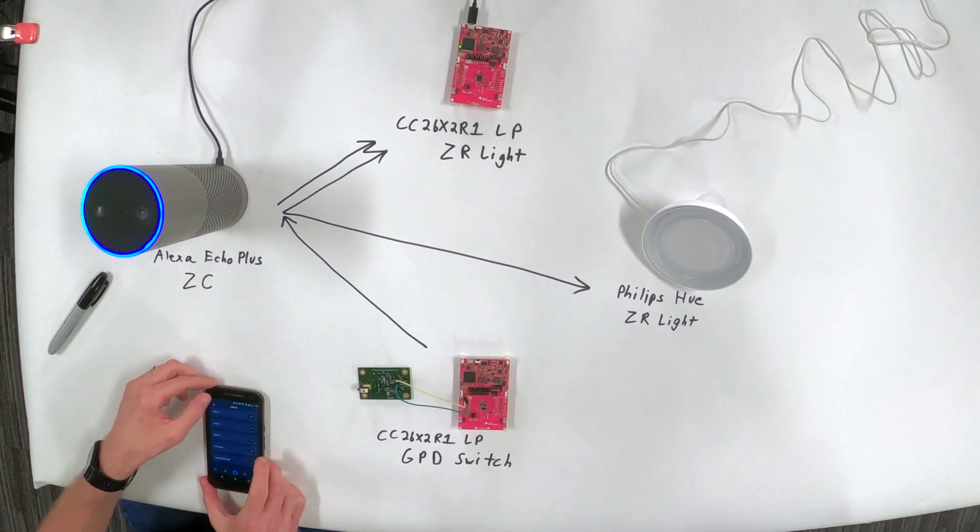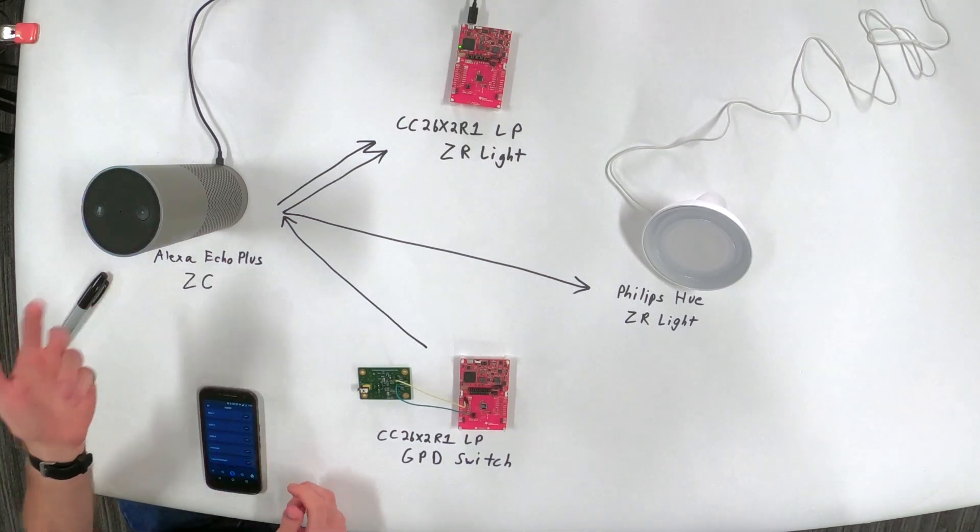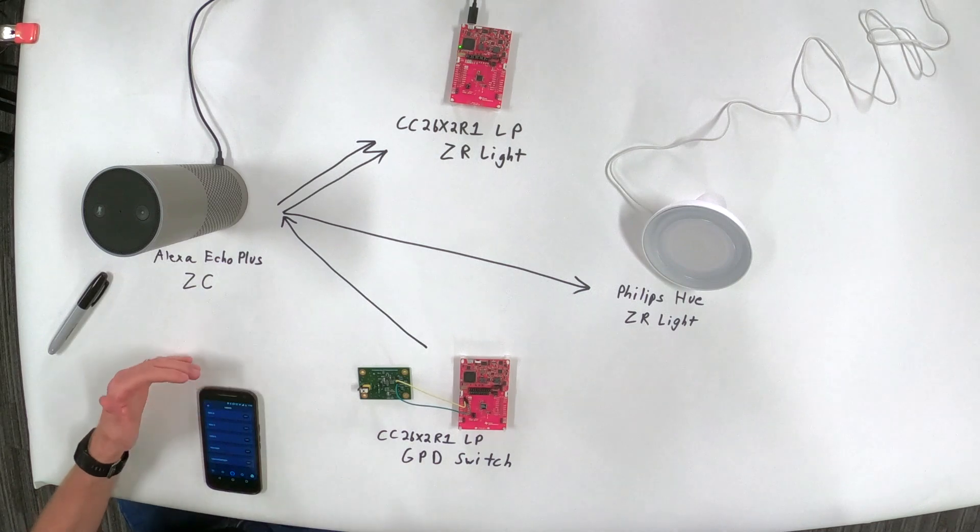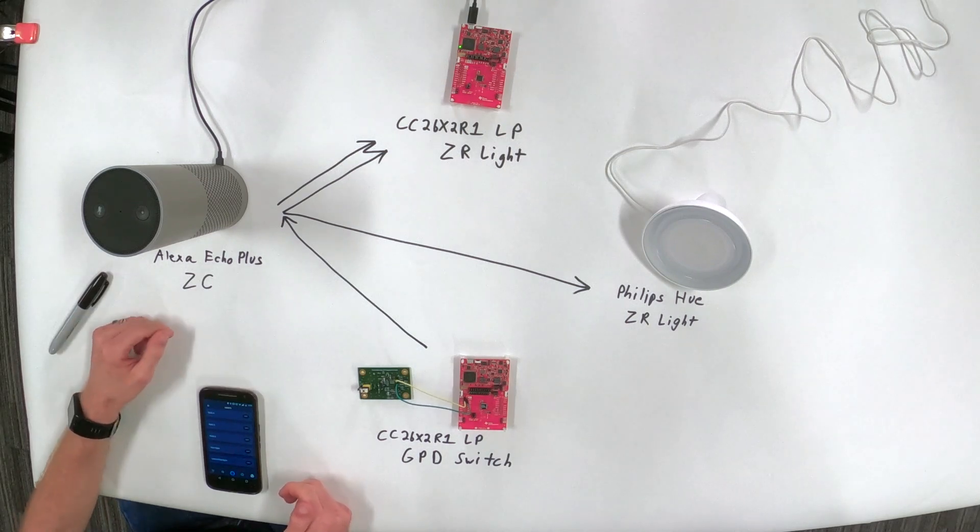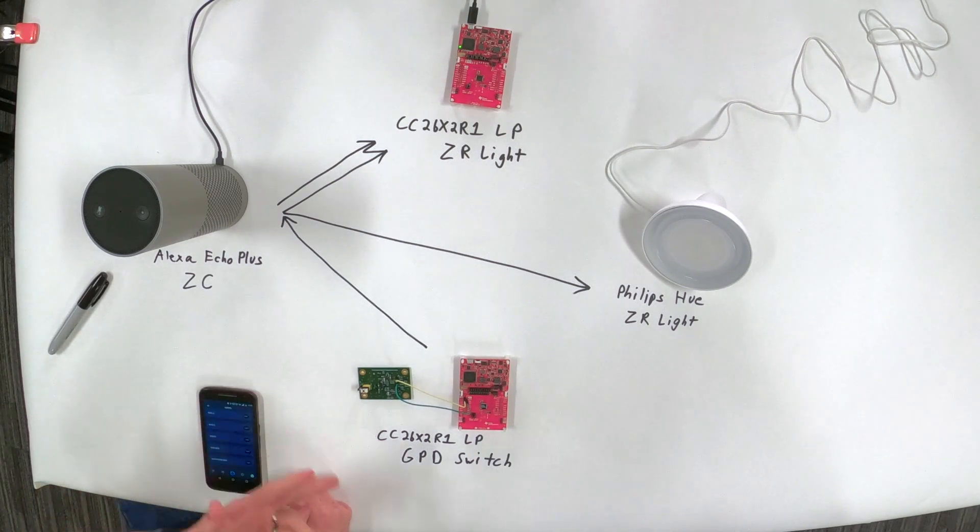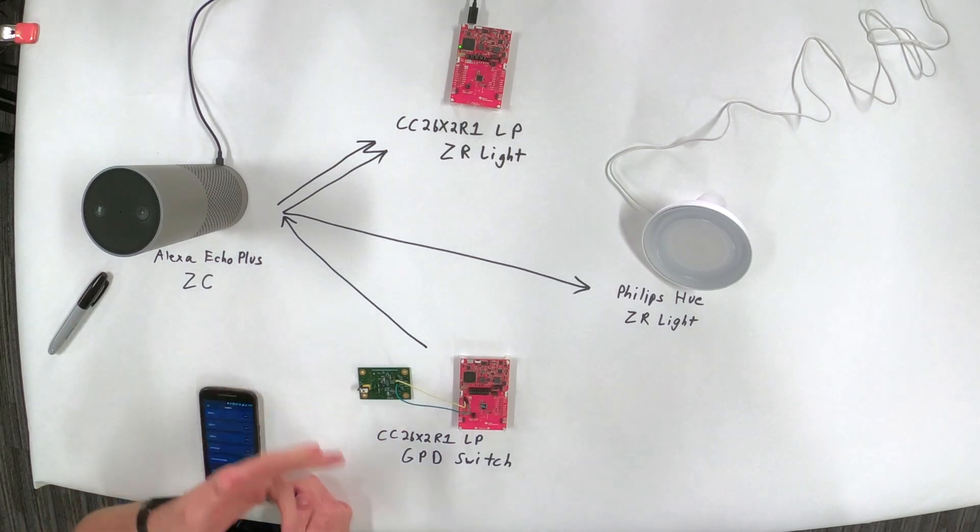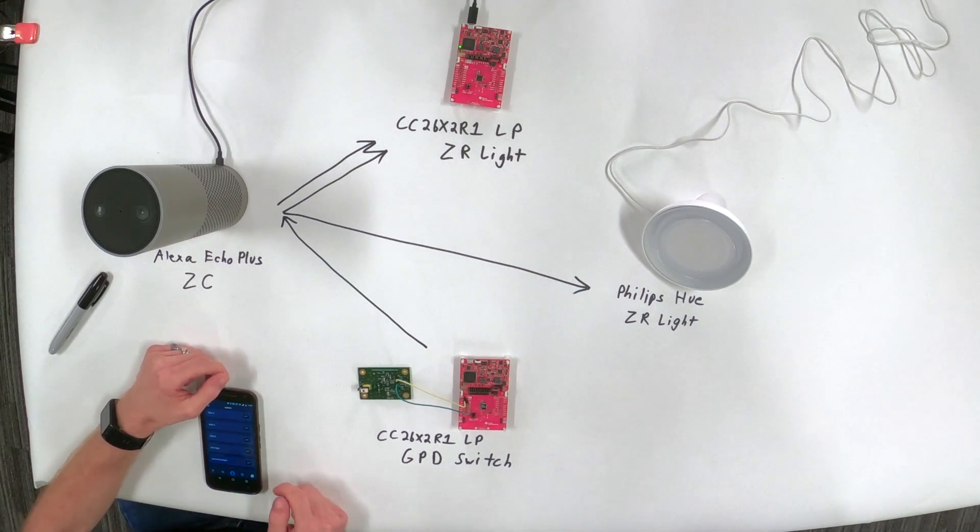So actually I'm probably using data right now on my phone and the Alexa is probably connected to the hotspot that we have locally. So through the cloud access, she is able to control a light and we showed that through the app, but now I'm also going to show through voice commands. So for example, I will use her, a voice command to control the Philips Hue light.